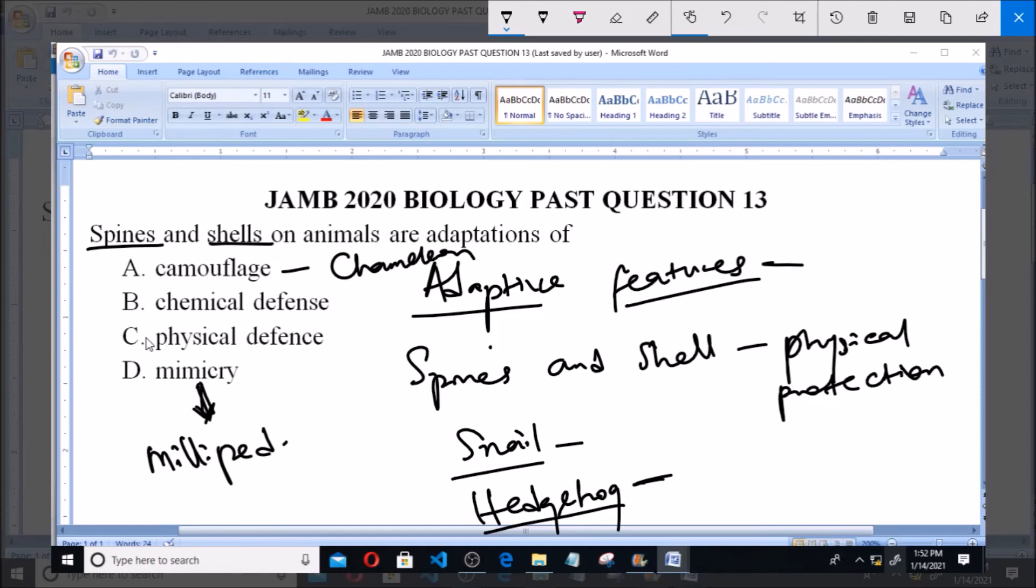They undergo adaptation of physical defense, that is, they protect themselves from physical harm or damage. So the answer to this question is actually option C, physical defense. I give typical examples as the snail and the hedgehog. The snail has a shell and the hedgehog has spines. So option C is the right answer to the question.